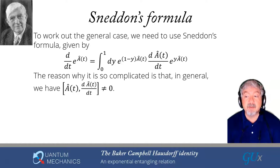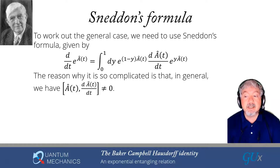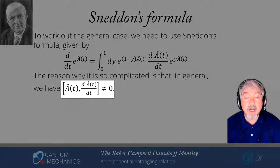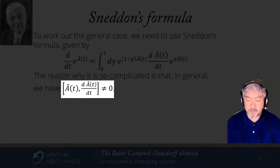For example, take A(t) = x + t·p where x and p are operators. A(t) commutes with itself, but dA/dt = p, and p does not commute with x + tp because [x,p] is non-zero. So generically, an operator that depends on time will not commute with its own derivative — a very important thing to remember when working with these expressions.